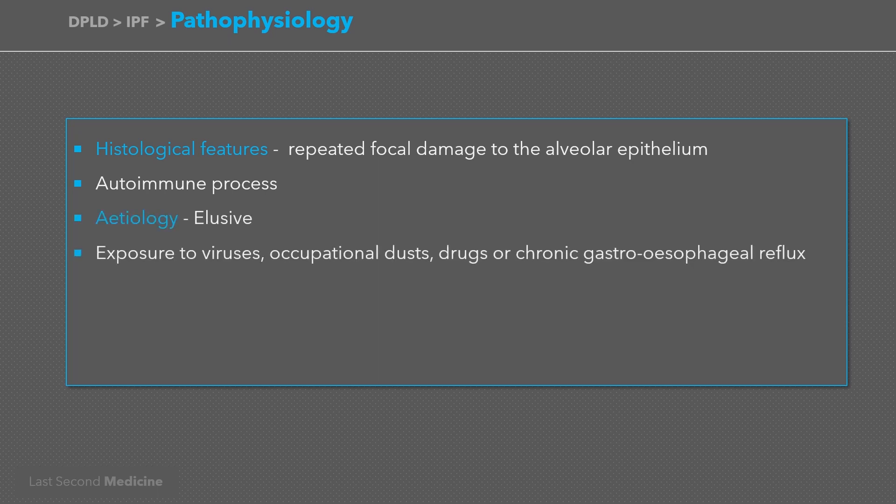Speculation about the etiology has included exposure to viruses, for example Epstein-Barr virus, occupational dusts like metal or wood, and exposure to drugs like antidepressants, or chronic gastroesophageal reflux disease. Familial cases are rare, but genetic factors that control the inflammatory and fibrotic response are likely to be important.